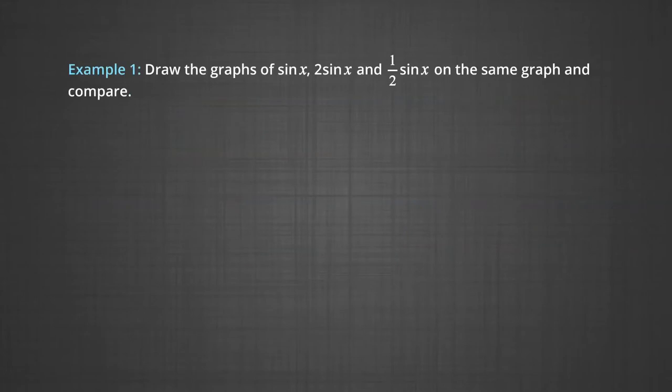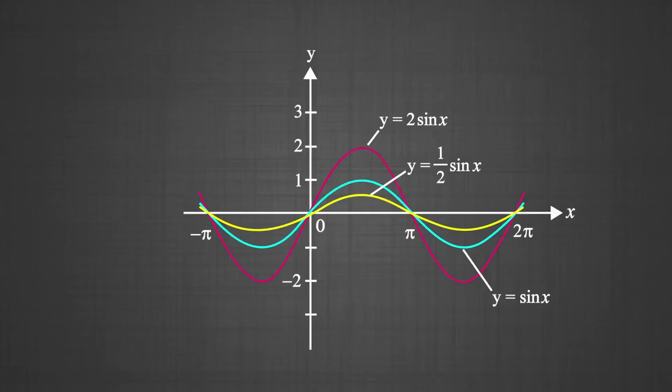In Example 1, we will draw the graphs of sin x, 2 sin x, and ½ sin x on the same graph and compare. To draw the graph of y = 2 sin x, we start with the graph of y = sin x and multiply the y-coordinate of each point by 2. This has the effect of stretching the graph vertically by a factor of 2.